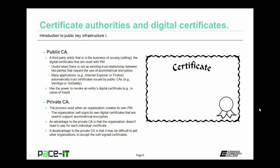Many applications automatically trust certificates issued by public CAs, as in Internet Explorer or Firefox automatically trust certificates issued by a CA like VeriSign or GoDaddy. The public CA has the power to revoke an entity's digital certificate in cases of fraud or a security breach. Then there is the private certificate authority, or private CA. This is the process that is used when an organization creates its own PKI. The organization self-signs its own digital certificates that are used to support asymmetrical encryption. An advantage to the private CA is that the organization doesn't need to pay for each individual certificate. A disadvantage is that it may be difficult to get other organizations to accept those self-signed digital certificates.